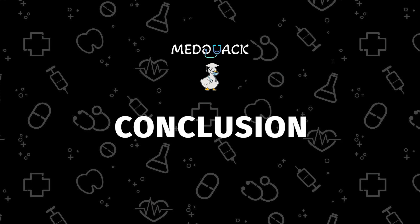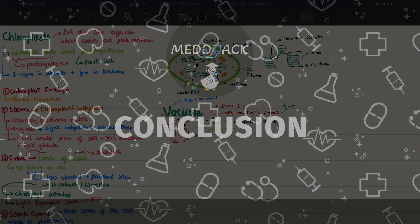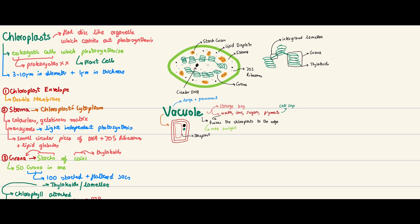That's it for our video on the chloroplast and the vacuole. We have two or three more videos left in the cell chapter and then we'll move on. I really want to do protein synthesis next. You can comment below with suggestions if there's a specific topic you'd like me to cover — especially if your December exams are coming up. Thank you so much for watching!